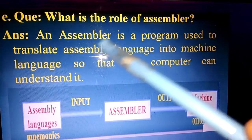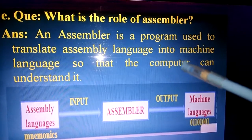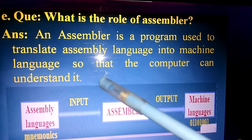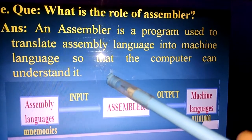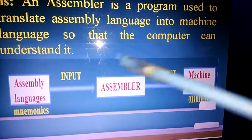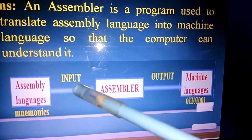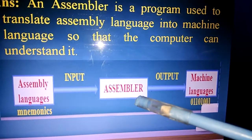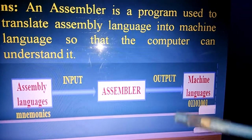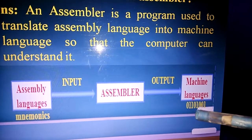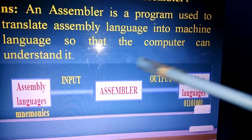Question: what is the role of an assembler? An assembler is a program used to translate assembly language into machine language so that the computer can understand it. Also make this diagram in your notebook: Assembly Language (mnemonic codes) → Assembler → Machine Language (e.g., 01101001).